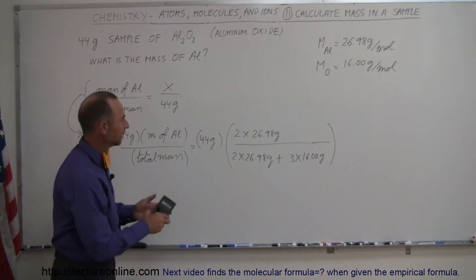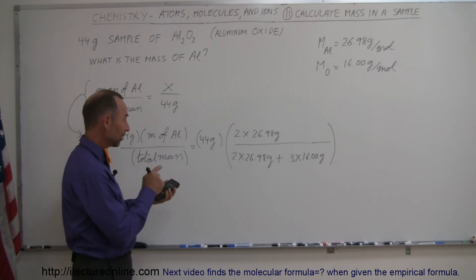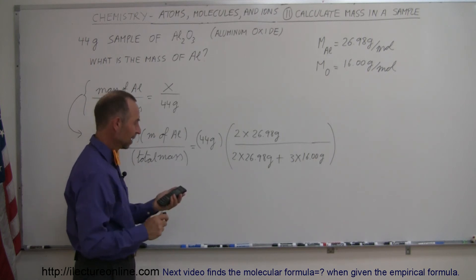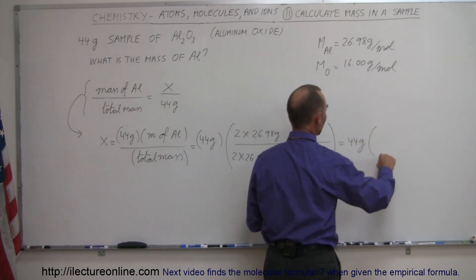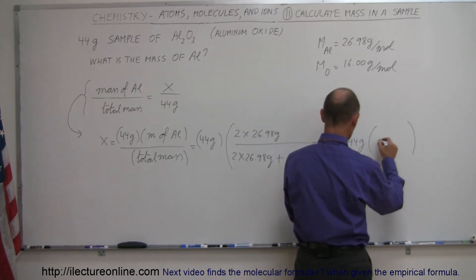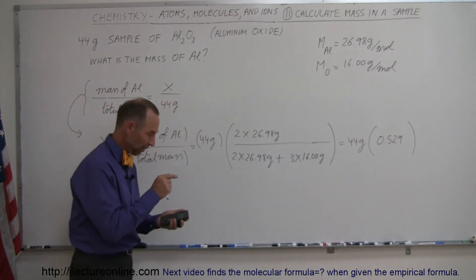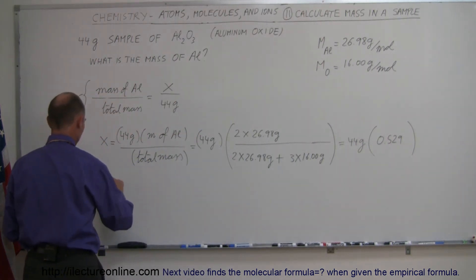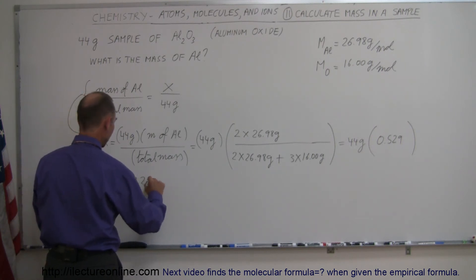Now we need a calculator. We have 26.98 times 2 in the numerator, and we divide by the denominator, which is 2 times 26.98 plus 3 times 16, and notice the ratio — this gives us 44 grams, the mass of the total sample, times the ratio of 0.529. So if I multiply it times 44, x equals 23.29 grams.